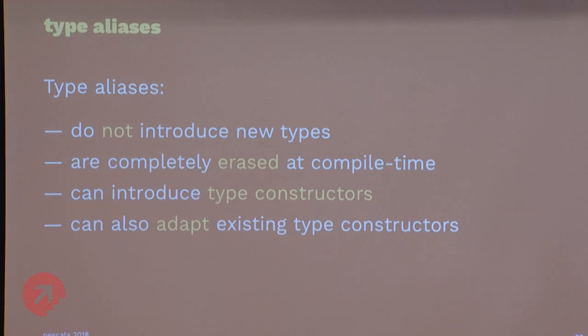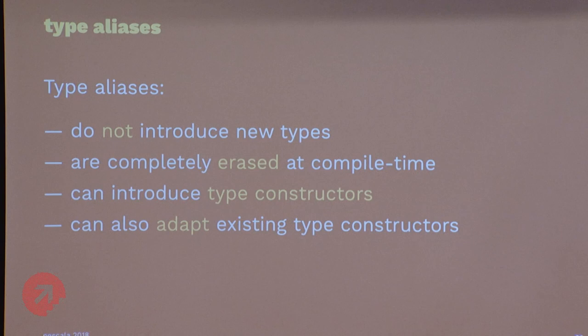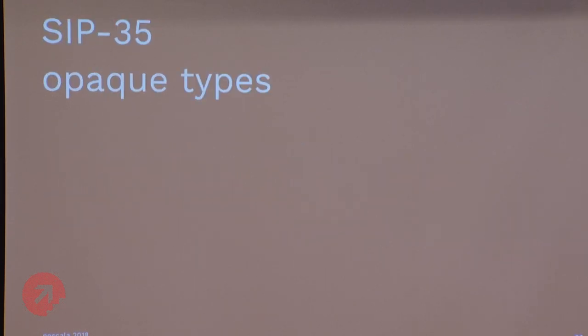To summarize: type aliases don't introduce new types. They're completely erased at compile time and don't exist at runtime. They can build type constructors and adapt to existing type constructors. This leads us to why opaque types are different.